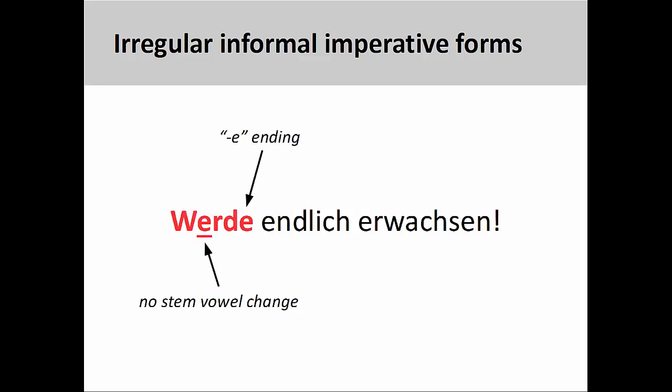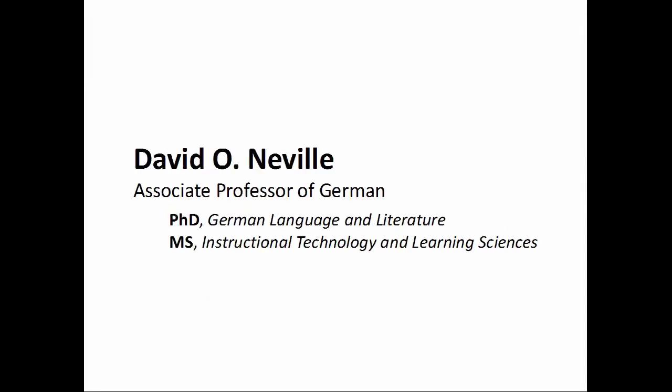Although werden, meaning 'to become,' does have a stem-vowel change in the indicative mood, this is not present in the singular informal imperative: 'Werde endlich erwachsen,' 'grow up already.' Since the verb stem ends in a d, however, we do need to add an e to the form.